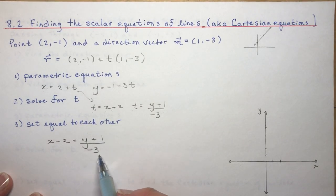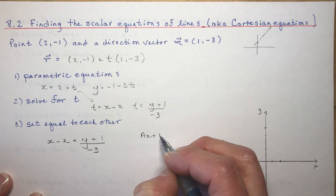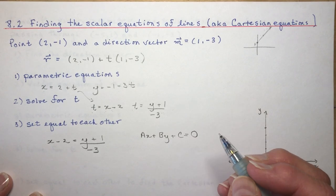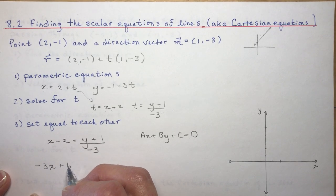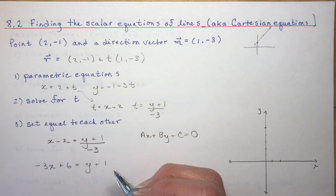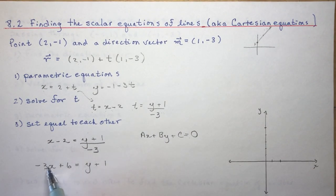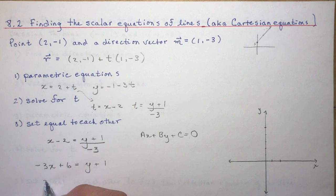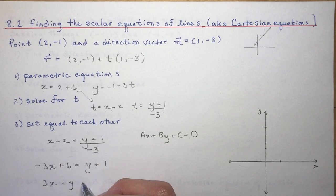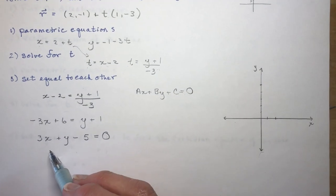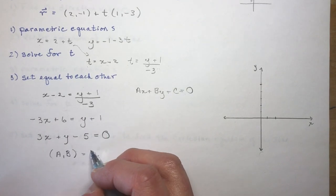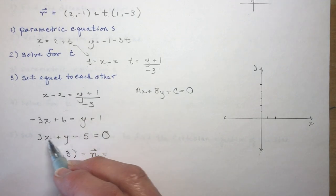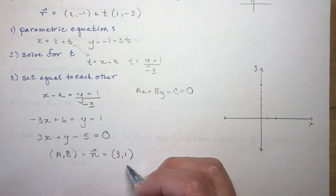Now I rearrange into the form ax plus by plus c equals 0. Multiplying by minus 3 gives minus 3x plus 6 equals y plus 1, then bringing everything to one side — keeping a positive — gives 3x plus y minus 5 equals 0. Looking at this equation, the normal vector (a, b) is (3, 1), so the normal vector is (3, 1).